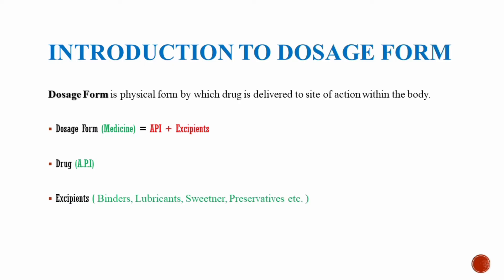A dosage form basically consists of two main components: a drug or an active pharmaceutical ingredient, which is responsible for the desired pharmacological effect, and the excipients, which include binders, lubricants, sweeteners, and preservatives. Excipients support the active pharmaceutical ingredient in a dosage form and provide it a proper shape.